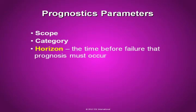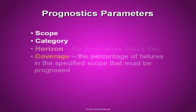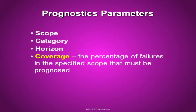Horizon is one of the most important parameters. This defines the time before failure that prognosis must occur. This can either be a fixed value, like 72 hours prior to failure, or a calculated value based on both the desired mission length and the corrective action time associated with each failure. The coverage is the percentage of failures in the specified scope that must be prognosed. This parameter can either be failure probability weighted, giving greater credit to failures that occur more frequently, or non-weighted so that all failures in the specified scope are counted equally.